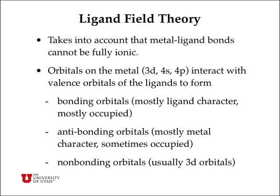Ligand field theory takes into account the fact that metal-ligand bonds cannot be fully ionic, which is the assumption of crystal field theory. The 3d, 4s, and 4p orbitals on the metal interact with valence orbitals of the ligand to form orbitals of three types: bonding orbitals, which are mostly ligand in character and mostly occupied; antibonding orbitals, which are mostly metal in character and sometimes occupied; and non-bonding orbitals, which are usually a subset of the 3d orbitals and are sometimes partially occupied.